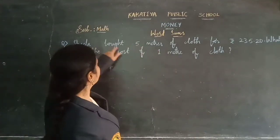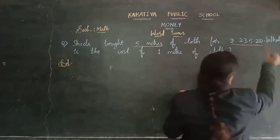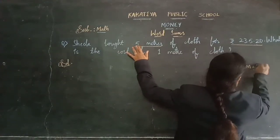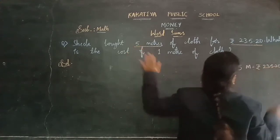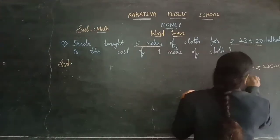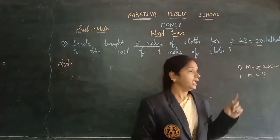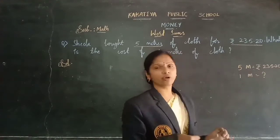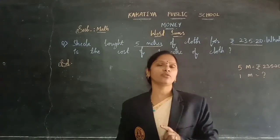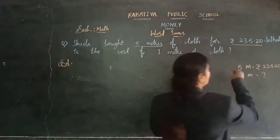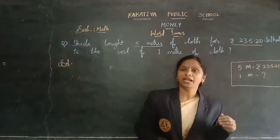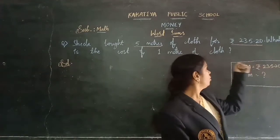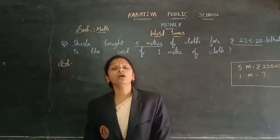Let's do this problem, children. Sheena bought 5 meters of cloth for 235 rupees 20 paise. For 5 meters of cloth she paid 235 rupees 20 paise. What is the cost of 1 meter of cloth? So 1 meter of cloth we are finding. In the previous problem we had 1 given and finding more. But in this problem, more meters of cloth are given and we are finding 1 meter — more given, less we are finding. So you need to do division. Divide 235.20 by 5 to get the cost of 1 meter.